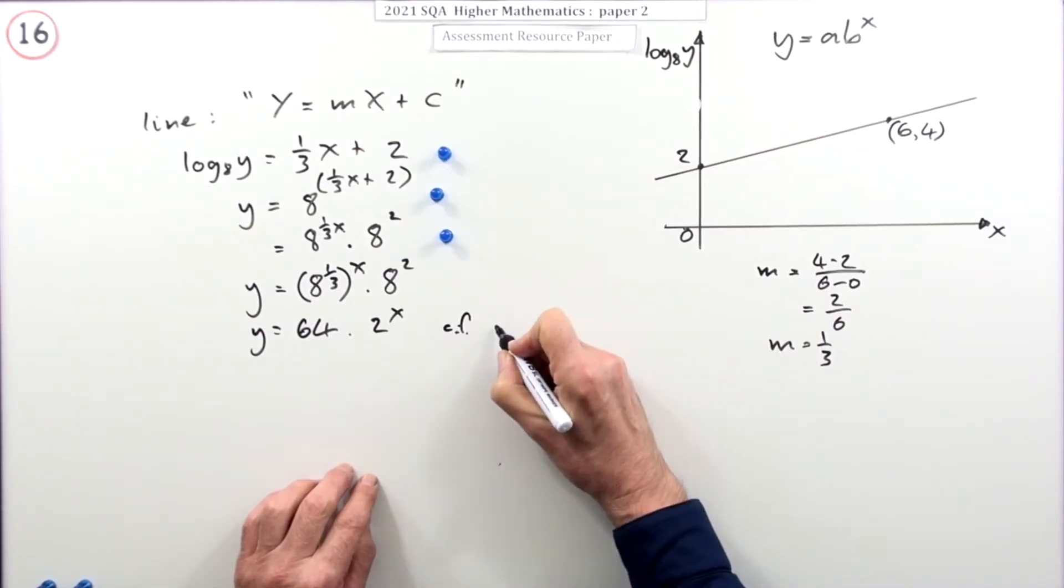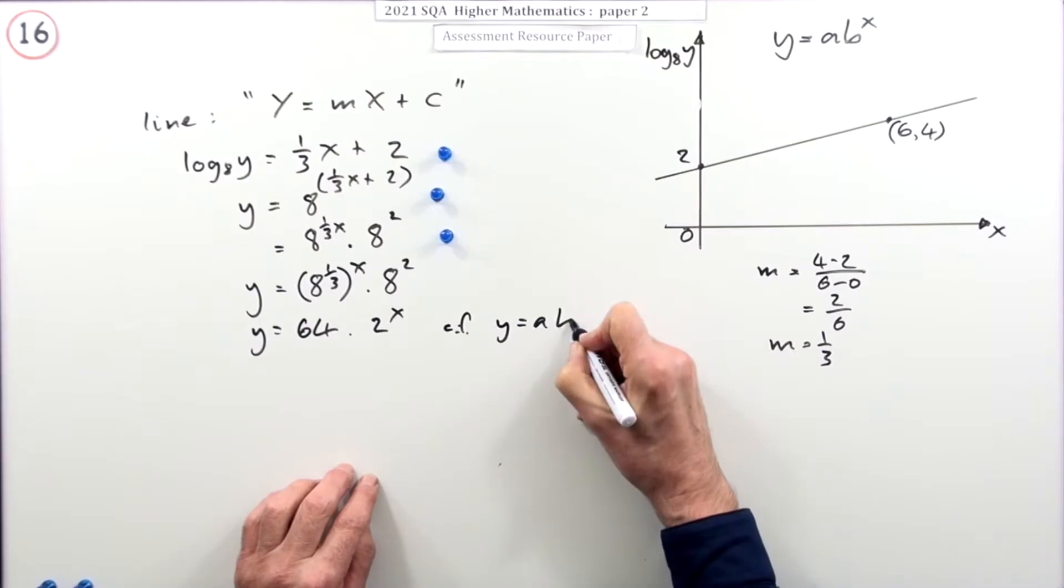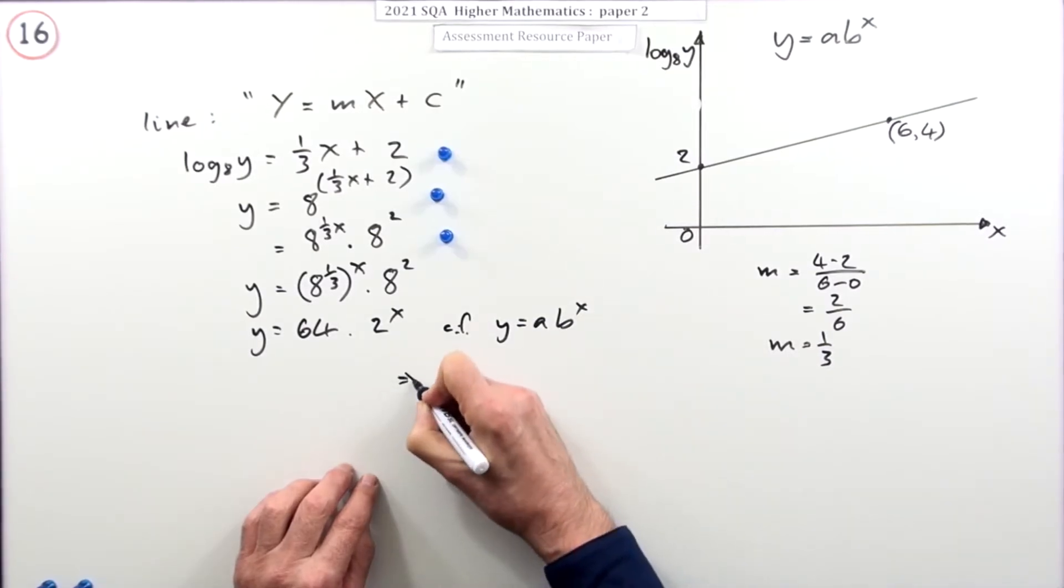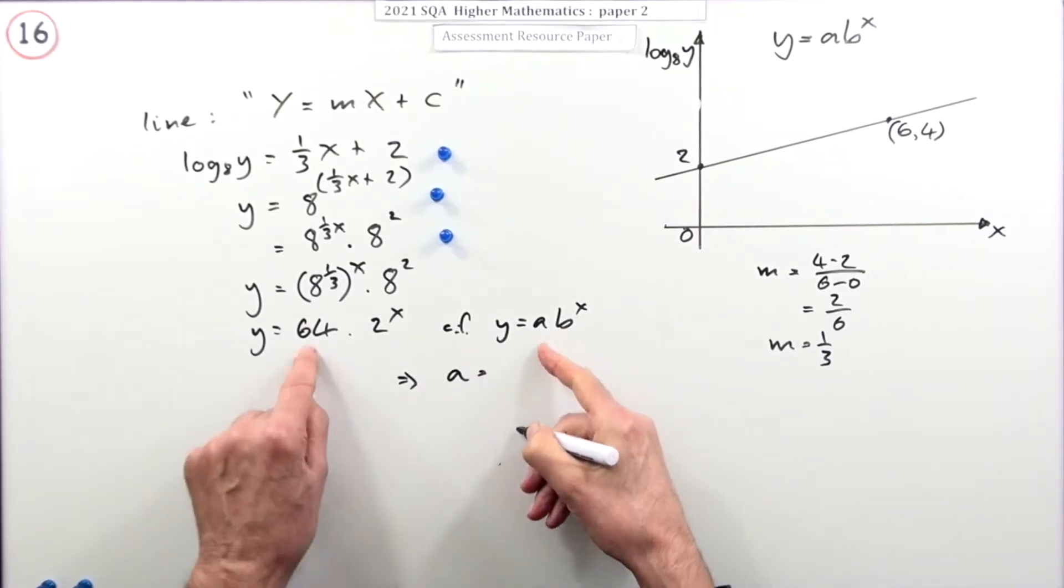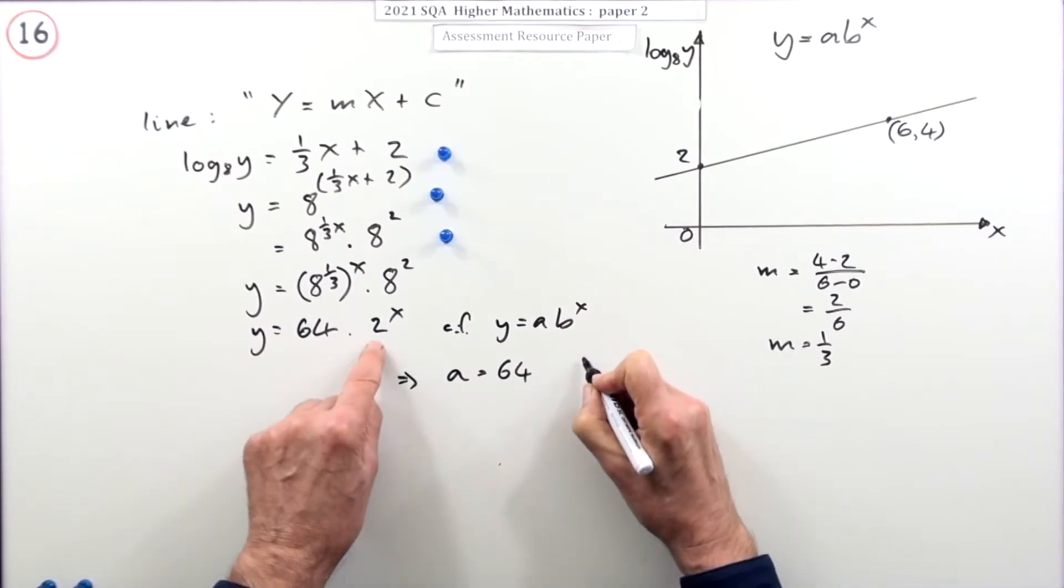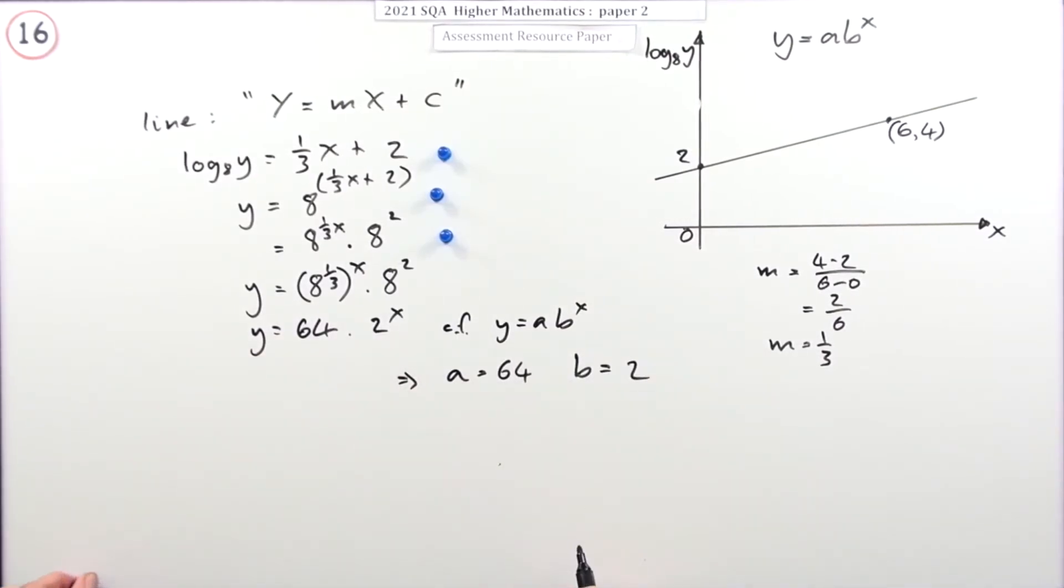Now, it's exactly in that form. So, if you compare that with Y equals AB to the X, that would mean that A is the 64, and the B is the 2. They've actually given a mark, one for each of them. But, I think that would actually come in here when you split it into that form. There. So, that's the question done. That's one way of doing it.